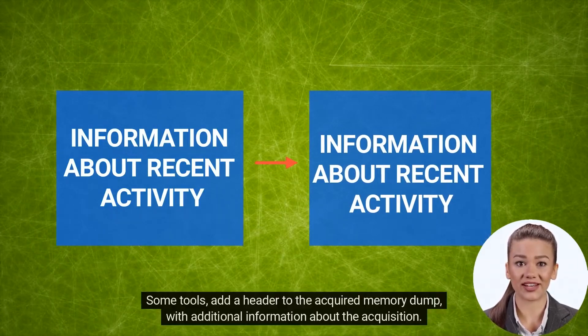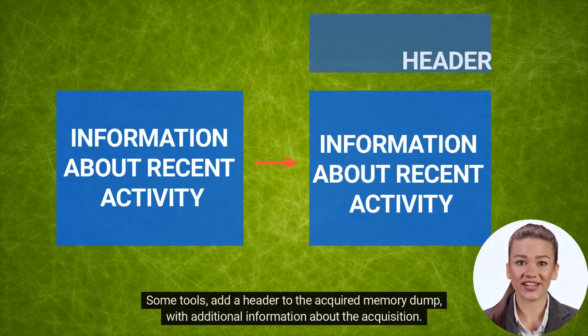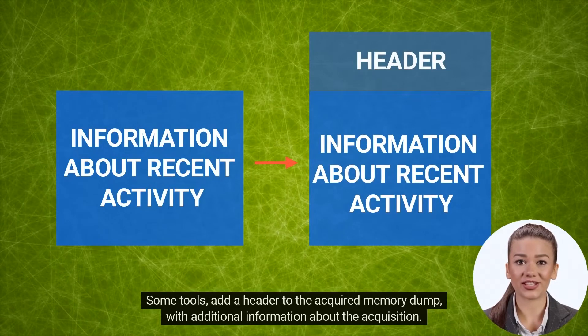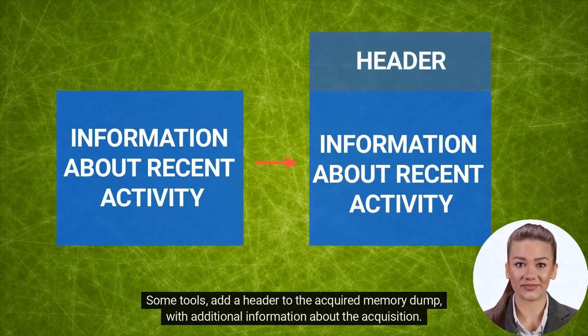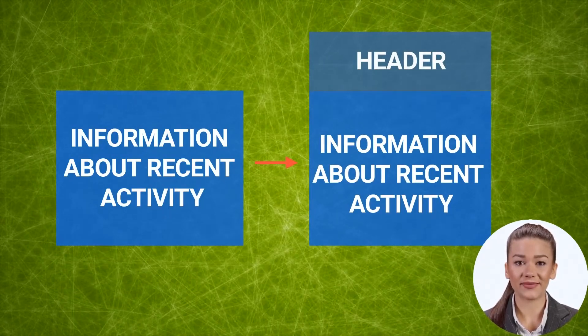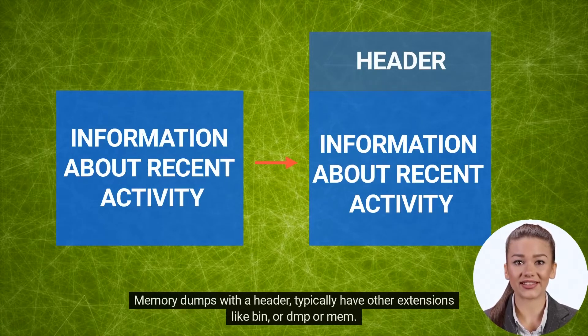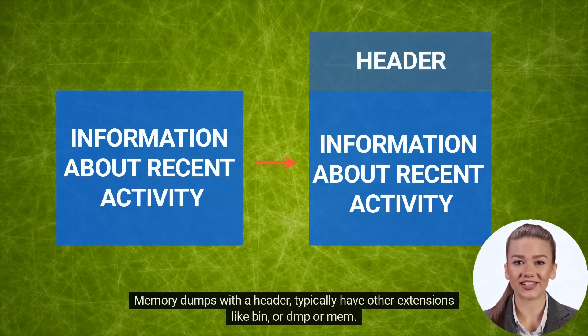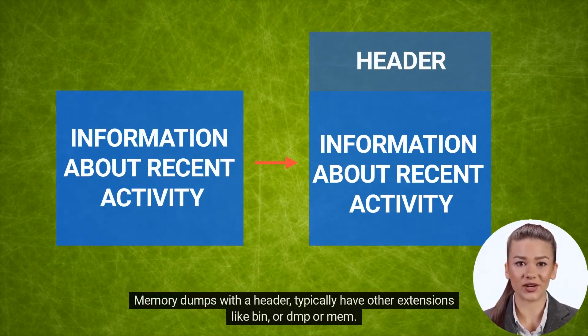Some tools add a header to the acquired memory dump with additional information about the acquisition. Memory dumps with a header typically have other extensions like BIN, DMP, or MEM.